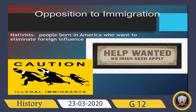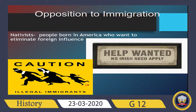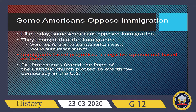Opposition to immigration: nativists were people born in America who wanted to stop immigration because they believed jobs and opportunities were being taken from them and given to people coming from other countries. Like today, some Americans opposed immigration, thinking immigrants were too foreign to learn American ways and would outnumber natives. Immigrants faced prejudice — a negative opinion not based on facts.